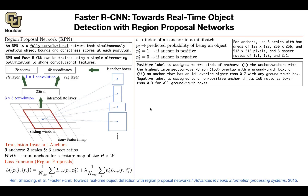The scales for anchor boxes are 128×128, 256×256, and 512×512 pixels. As for aspect ratios, you have 1:1, 1:2, and 2:1 — giving nine anchor configurations in total per pixel.